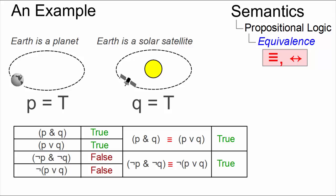So equivalence produces a value of true if and only if both propositions are true or if and only if both propositions are false.